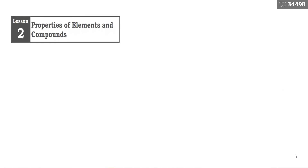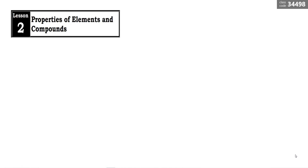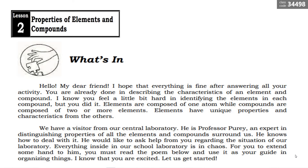Let's proceed with our lesson proper. This is Lesson 2 — all about properties of elements and compounds. After answering all your activities, you are already done with describing the characteristics of an element and compound. Elements are composed of one atom, while compounds are composed of two or more elements. Elements have unique properties and characteristics from others.